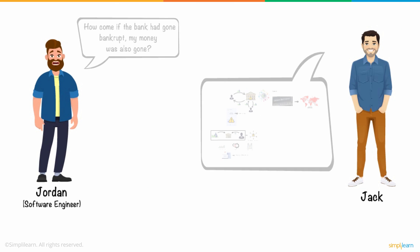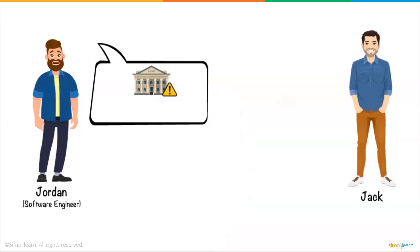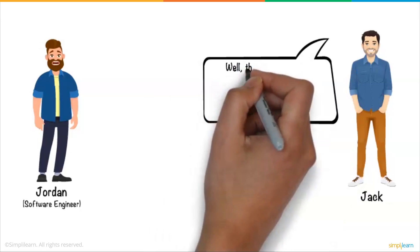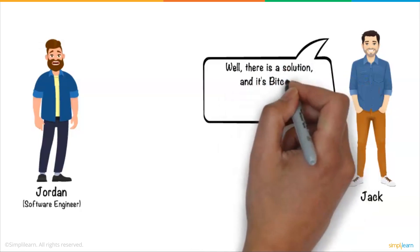Jordan was shocked to know such an in-depth mechanism of banks and how they negatively affect their money, and wondered if these issues are so prominent, what is a solution? And that's when Jack replied, well, there is a solution, and it's Bitcoin.